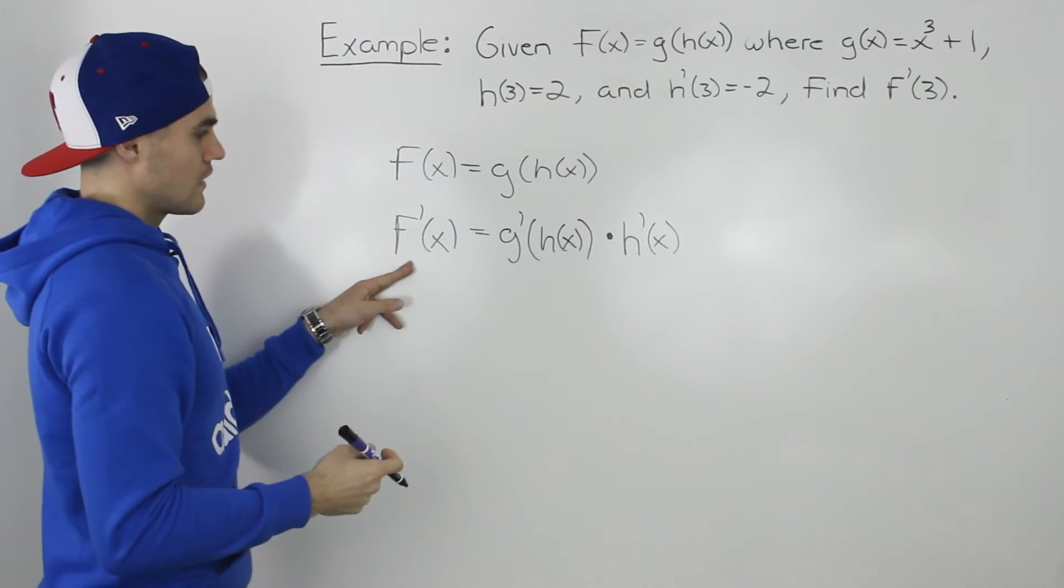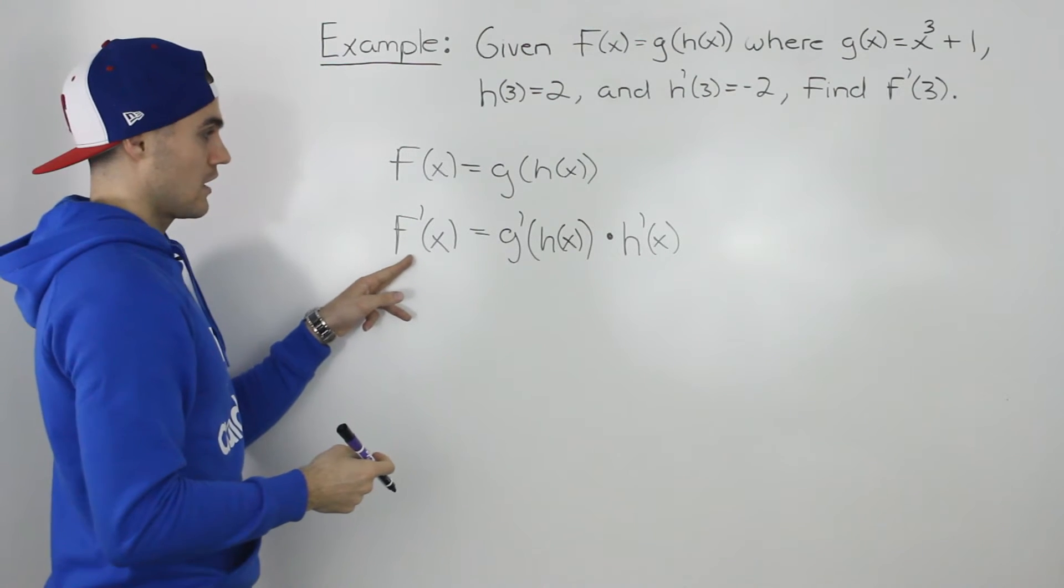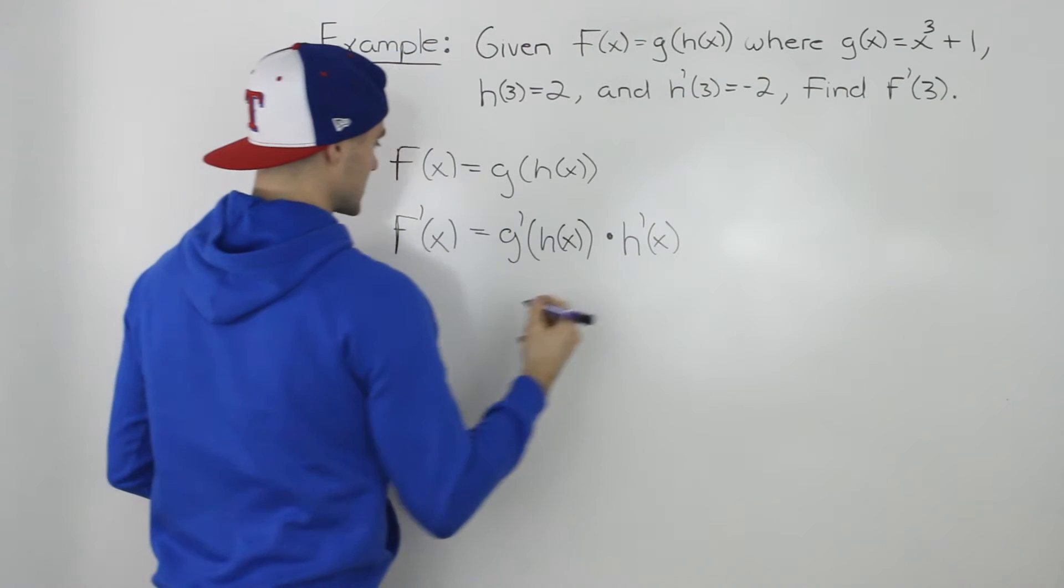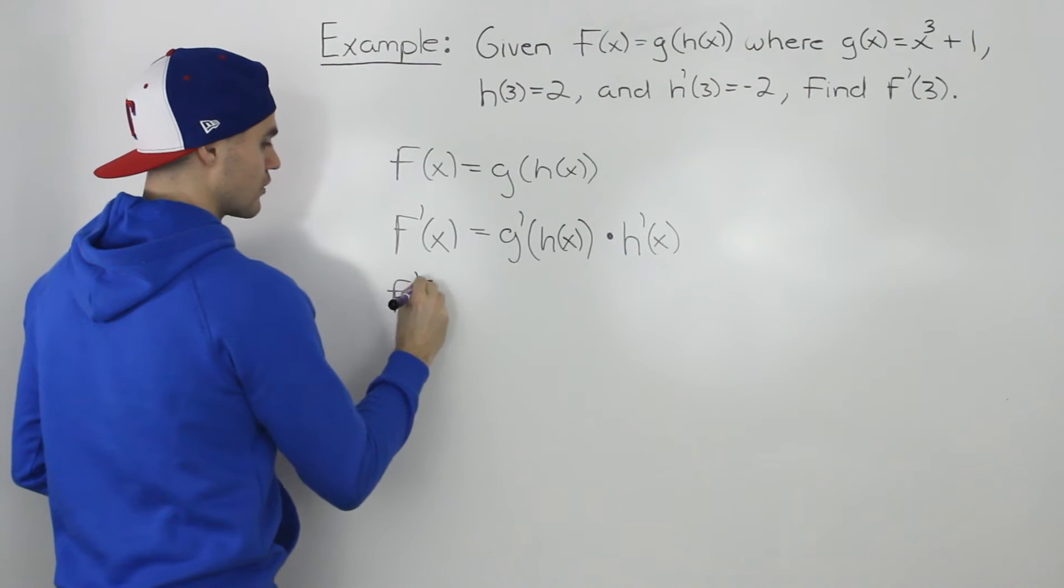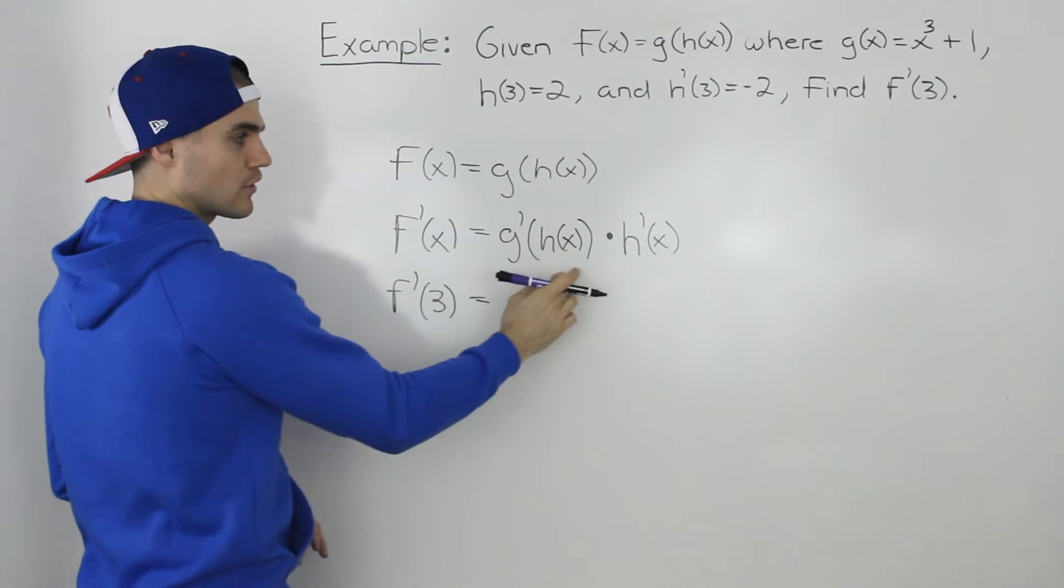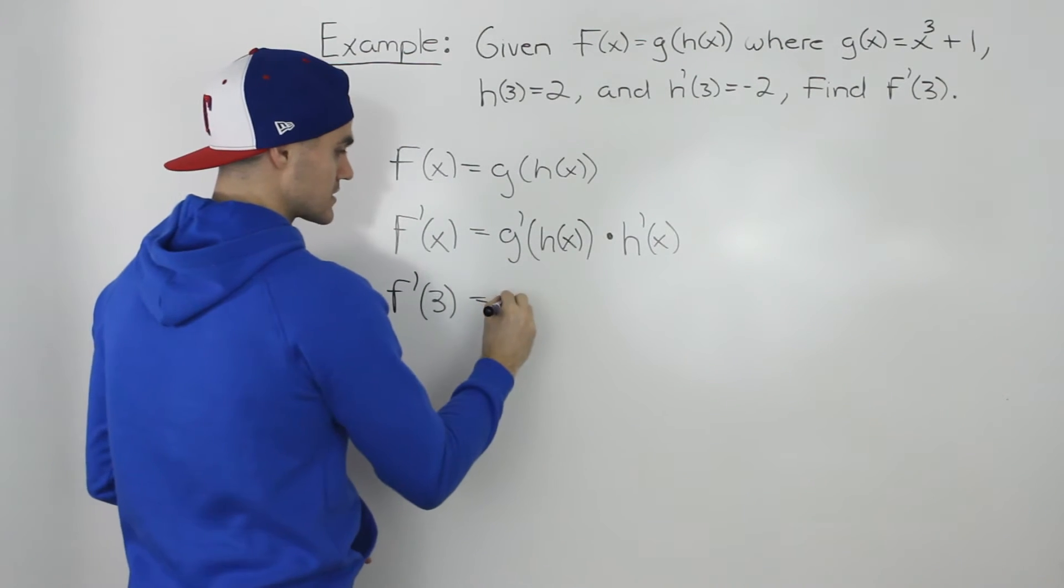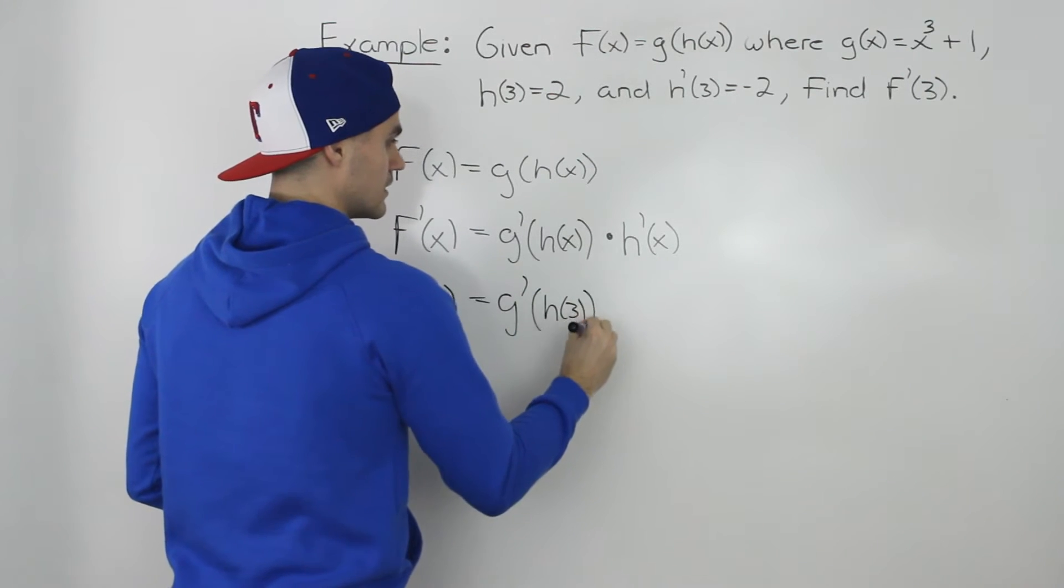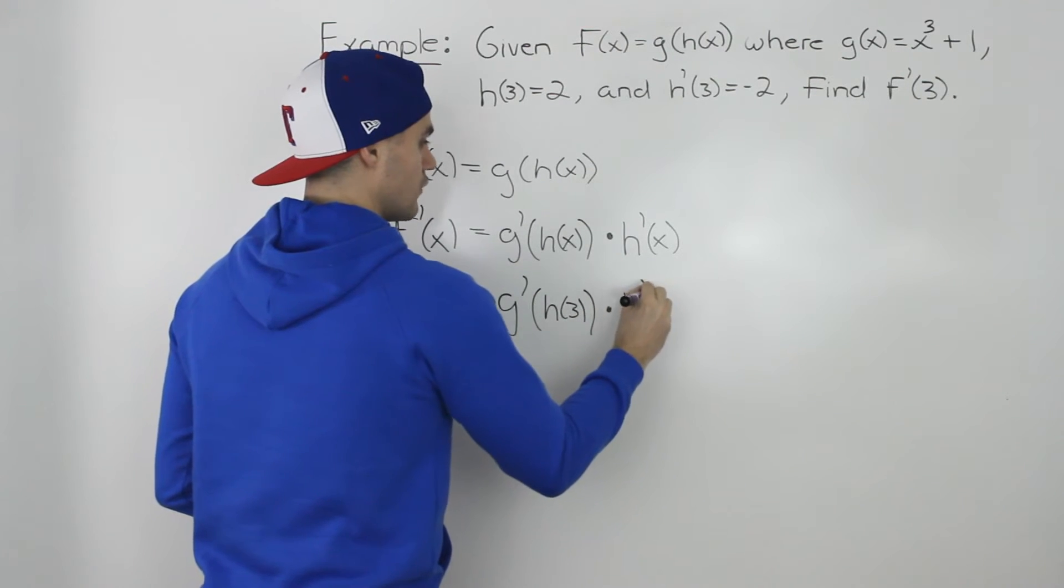Now we have the general derivative of f(x), but we need the derivative at x = 3. We're looking for f'(3). Let's plug in 3 for all the x values on the right side. We'd have g'(h(3)) × h'(3).